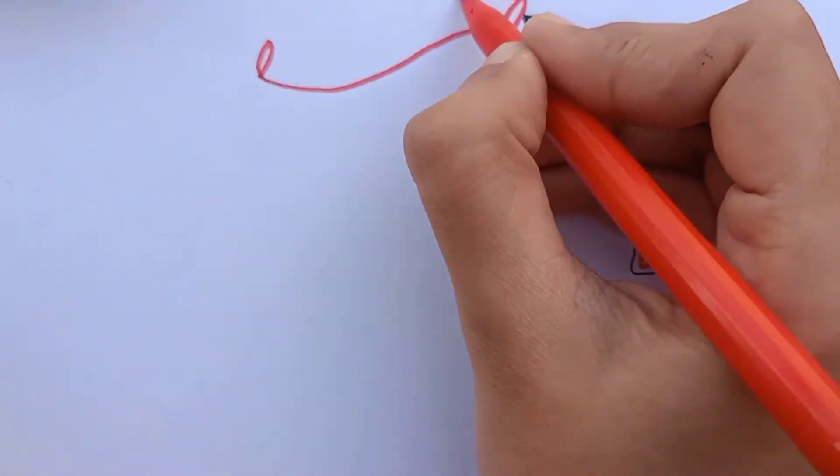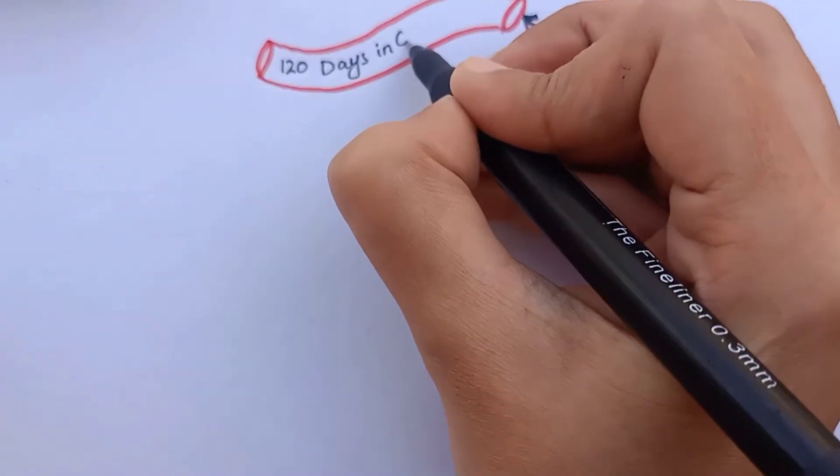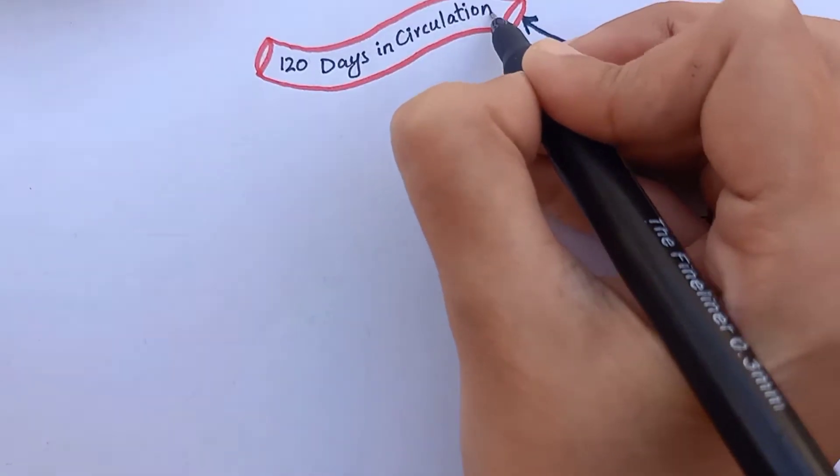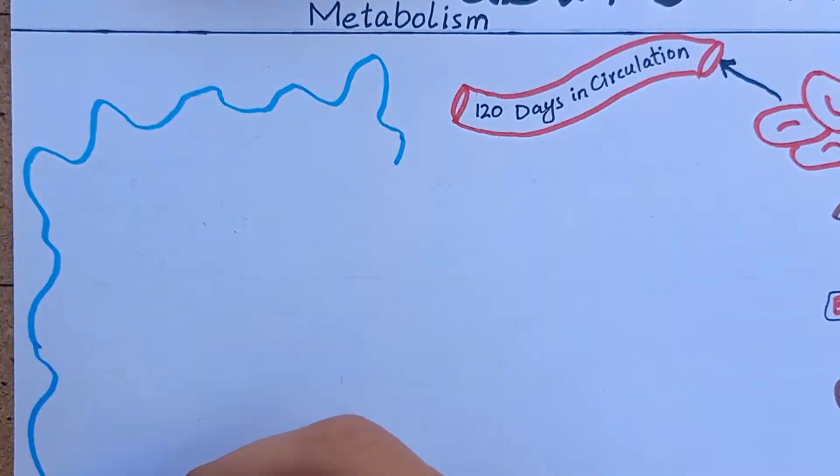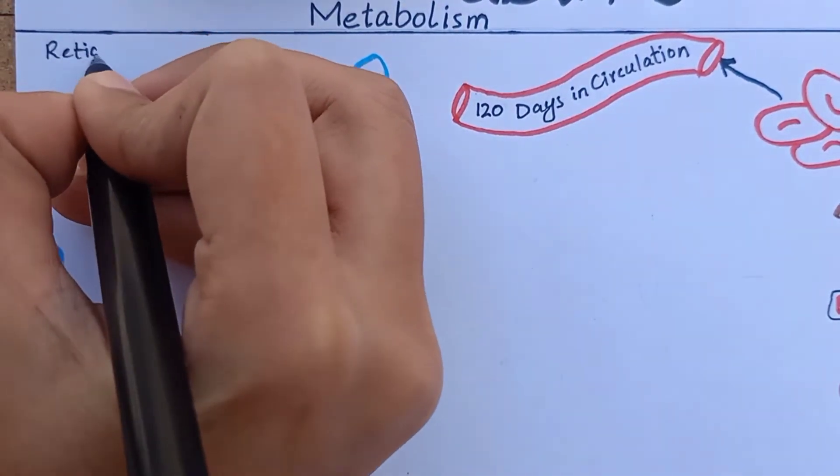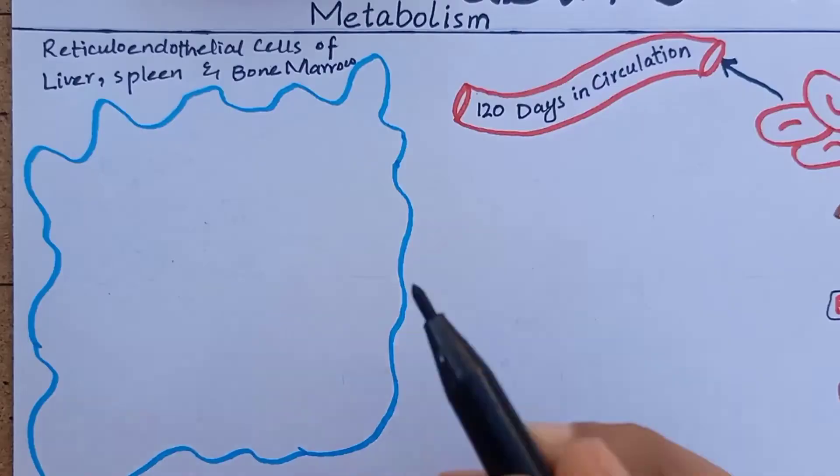The metabolic system of old red blood cells become progressively less active and the cells become more and more fragile. Old red blood cells rupture in reticuloendothelial system that mainly consist of Kupffer cells of liver and macrophages of spleen and bone marrow.